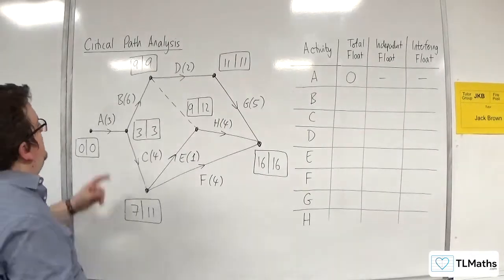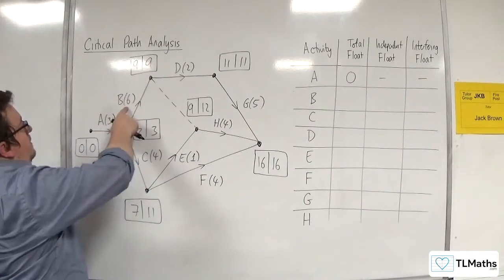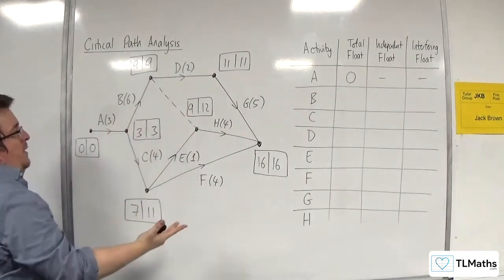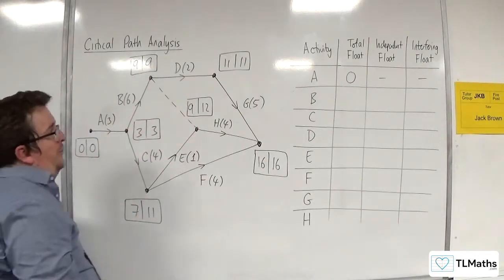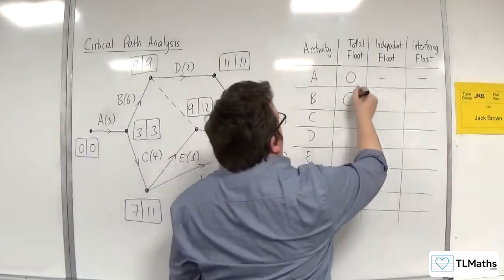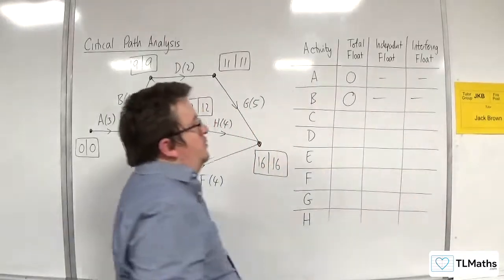For activity B, we've got 3, 3 and 9, 9. The duration is 6. So B is also critical. So total float is 0, dash, dash for independent and interfering float.